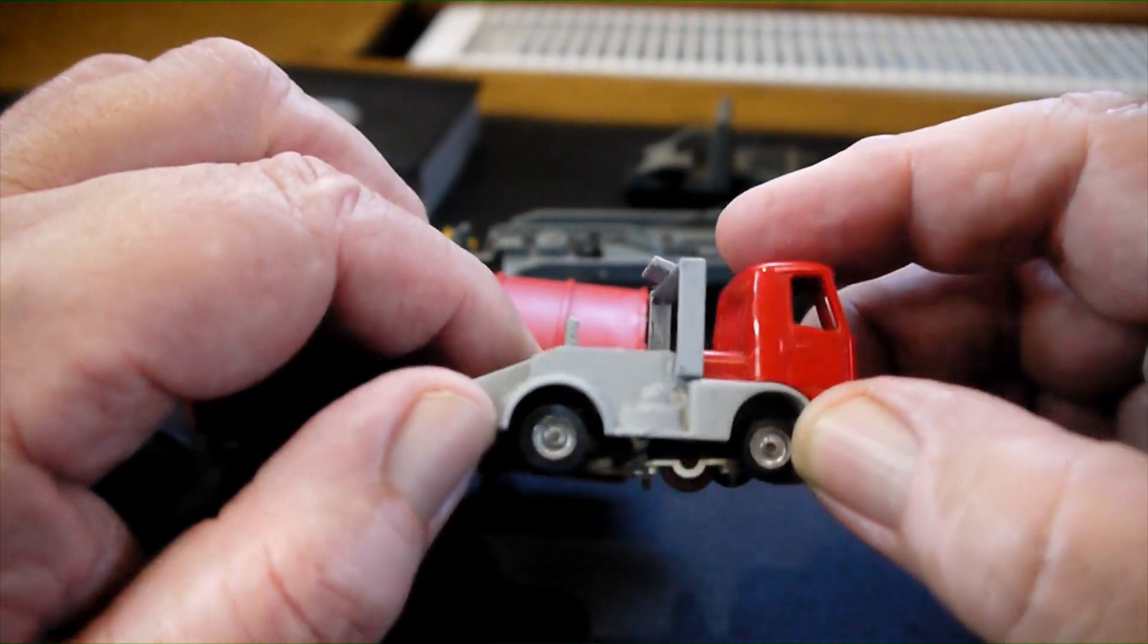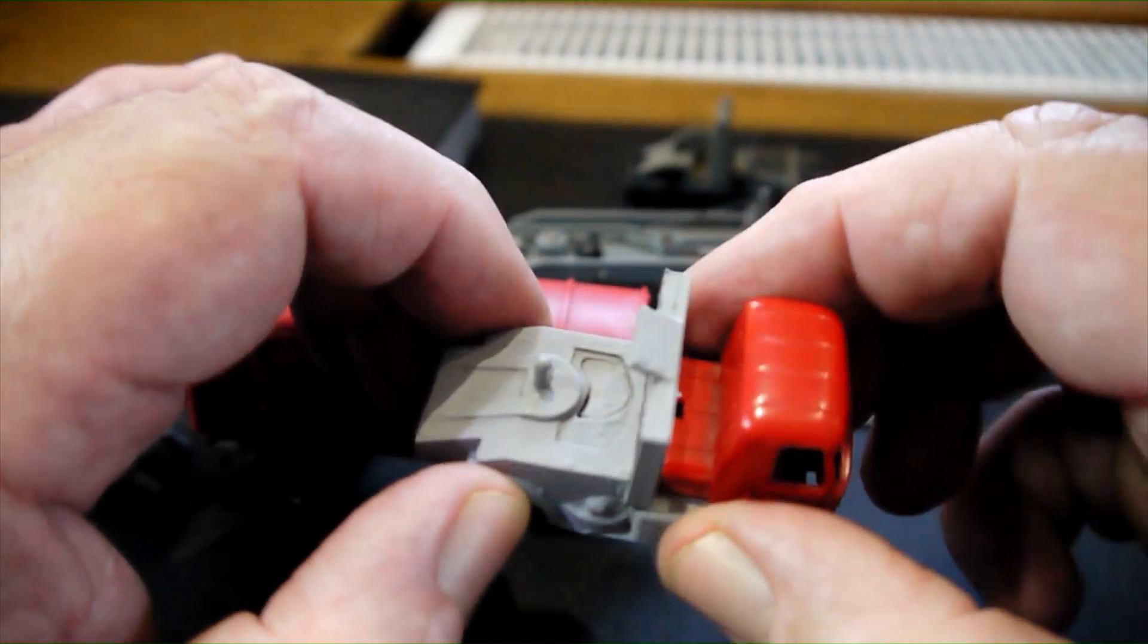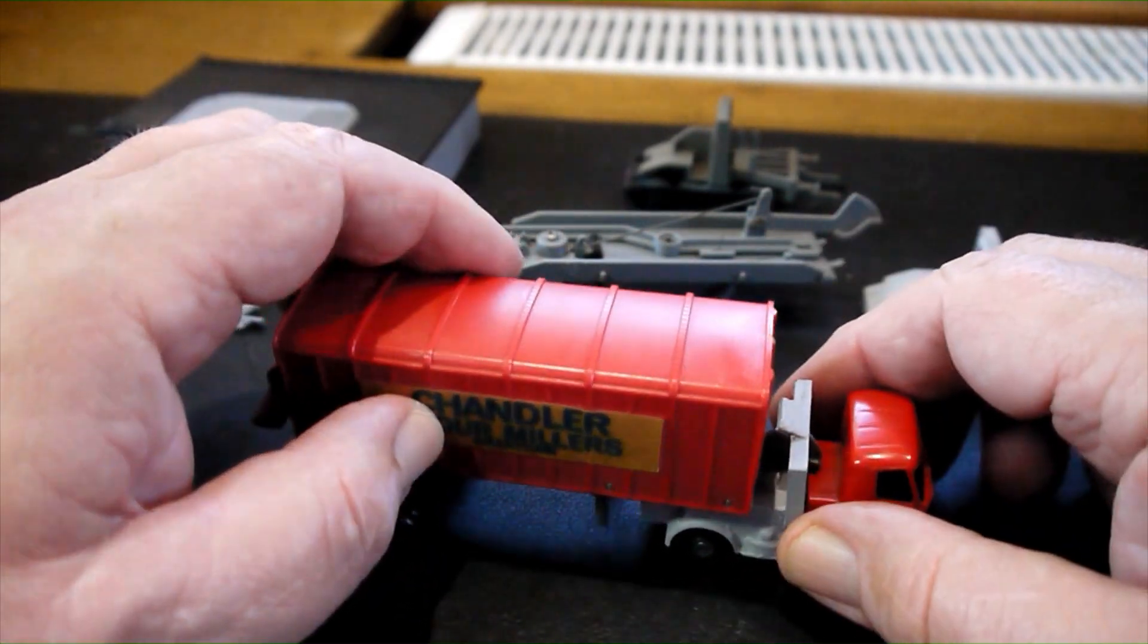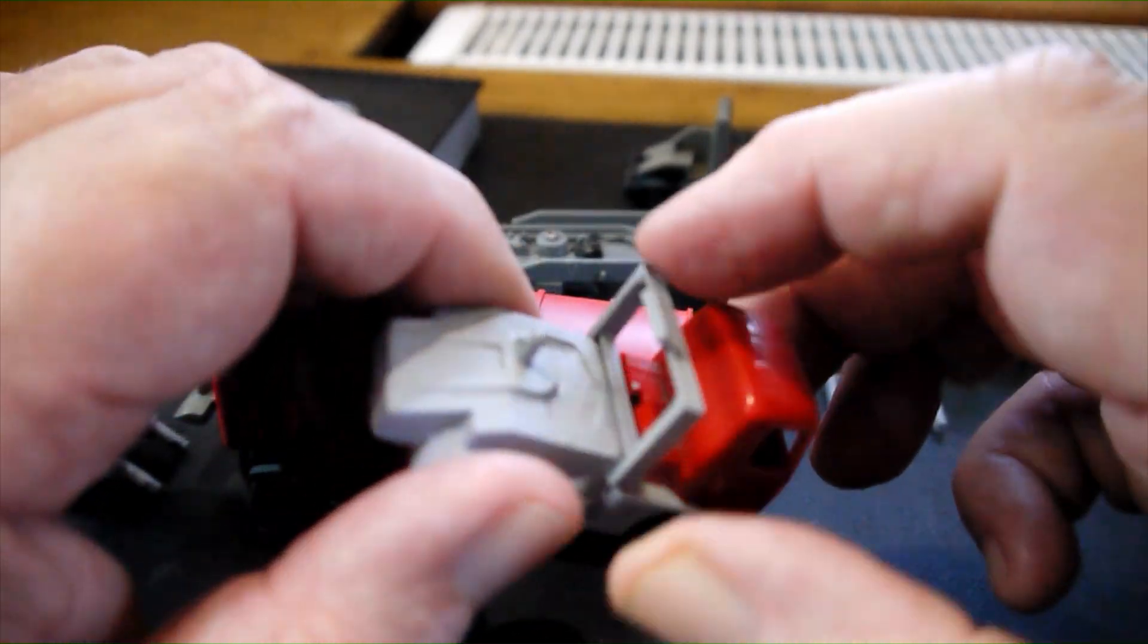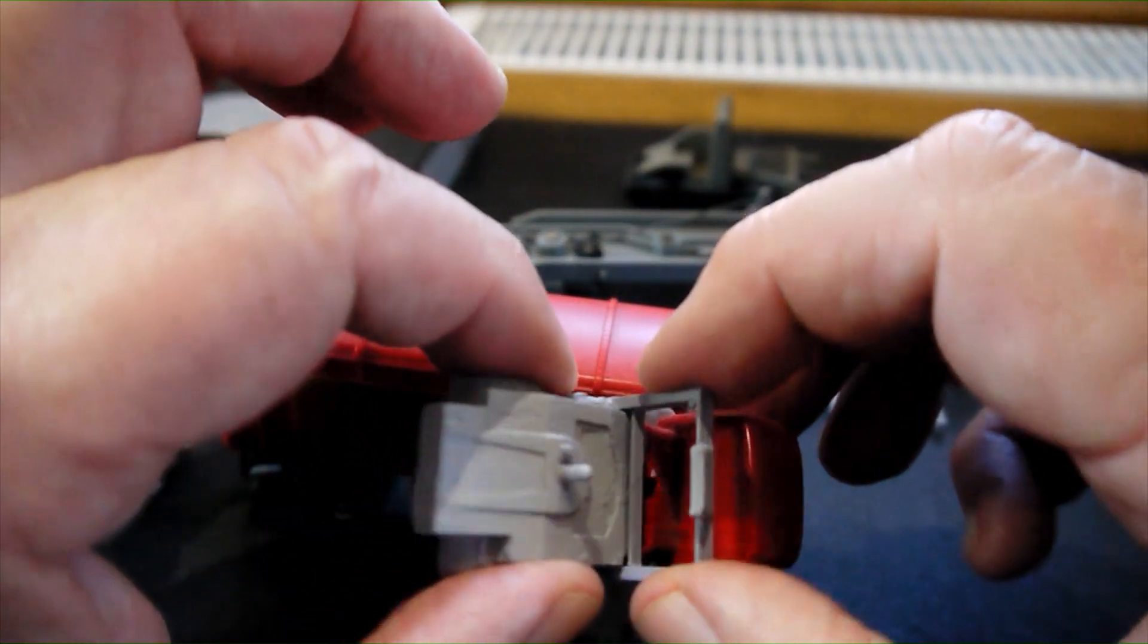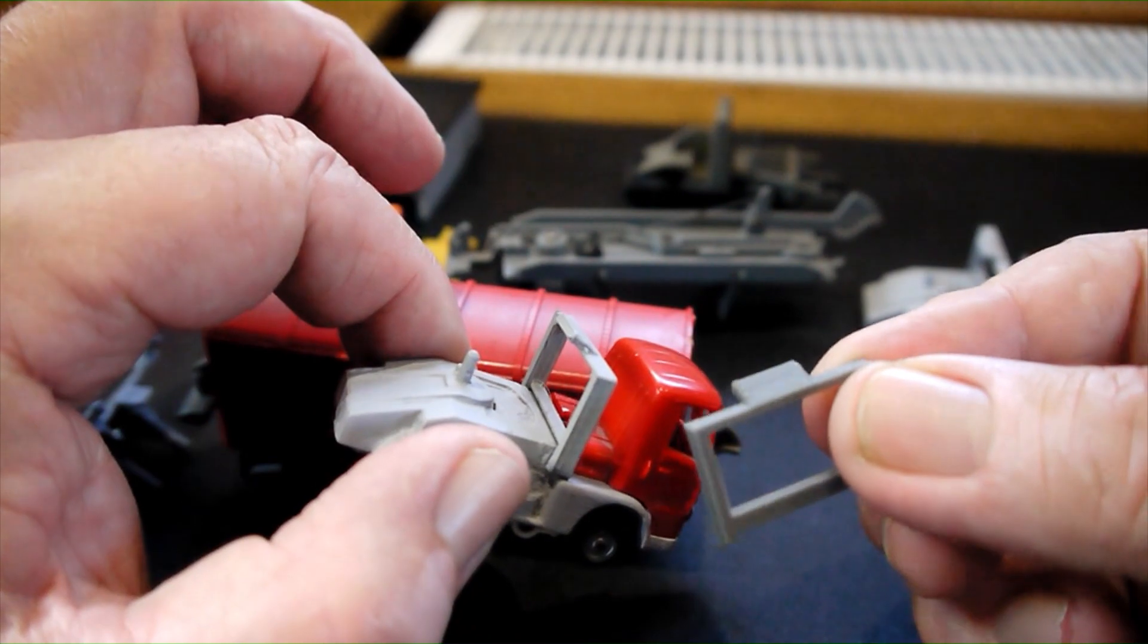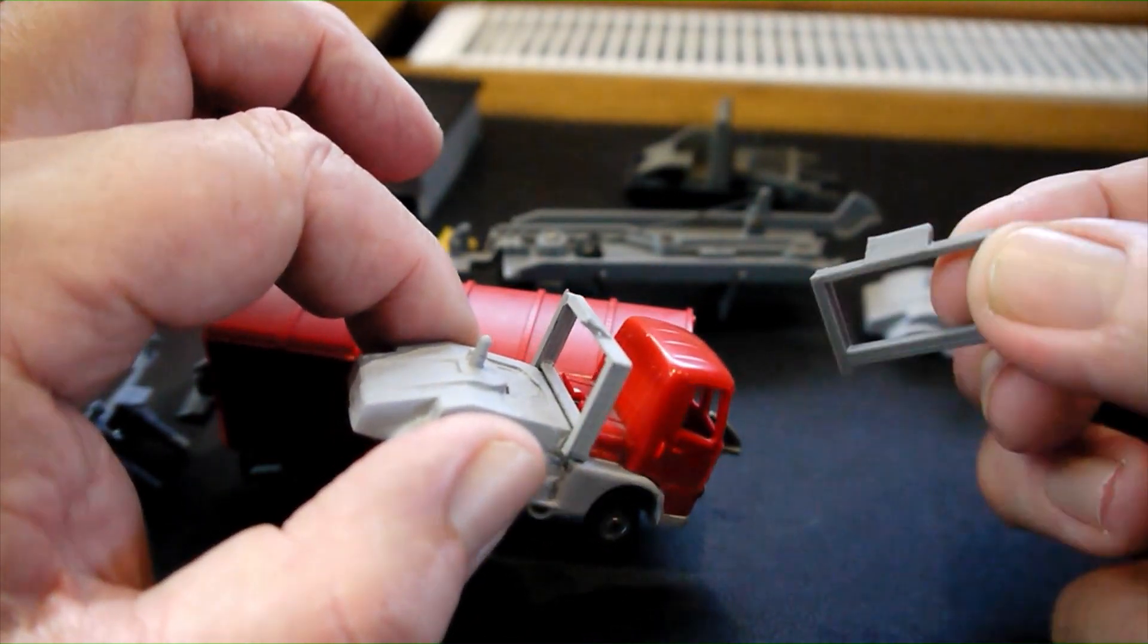But there it is. Now it works by hooking onto the tractor unit like that underneath this loop, and virtually all of these you see have this loop broken off because over time it's gone brittle and the plastic has snapped. But again with the wonders of 3D printing, making a replacement is not that difficult.